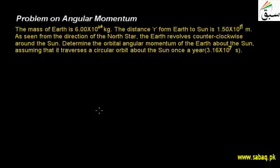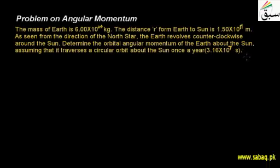We will discuss angular momentum. Here we have a problem where the mass of Earth is given as 6.00 × 10²⁴ kg, the distance R from the Earth to the Sun is 1.50 × 10¹¹ meters. As seen from the direction of the north star, the Earth revolves counterclockwise around the Sun. We have to determine the orbital angular momentum of the Earth about the Sun, assuming it traverses a circular orbit once a year, with the time period T = 3.16 × 10⁷ seconds.